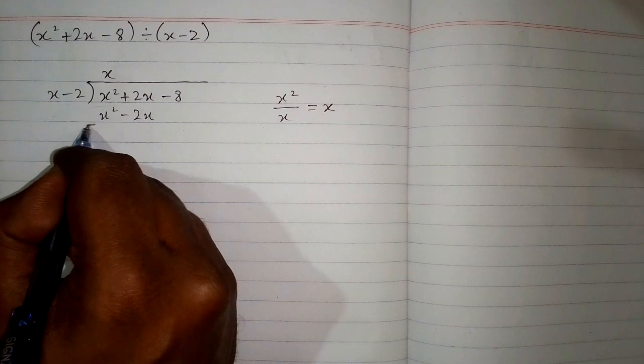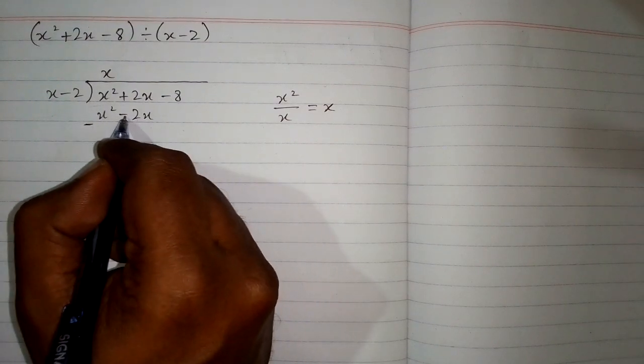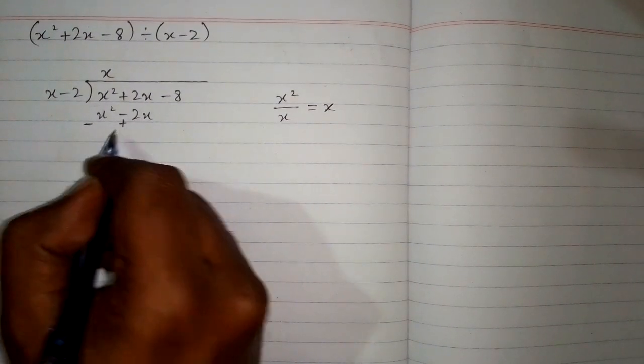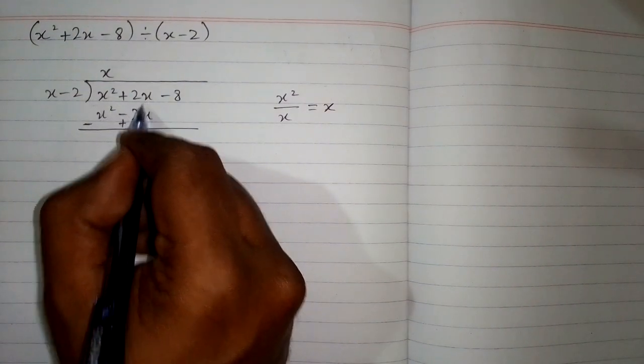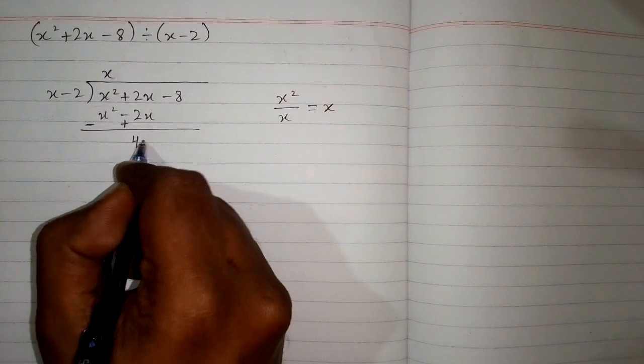This is plus x square, so it will become minus x square, and minus 2x will become plus 2x. Now x square minus x square is 0 and 2x plus 2x is 4x.